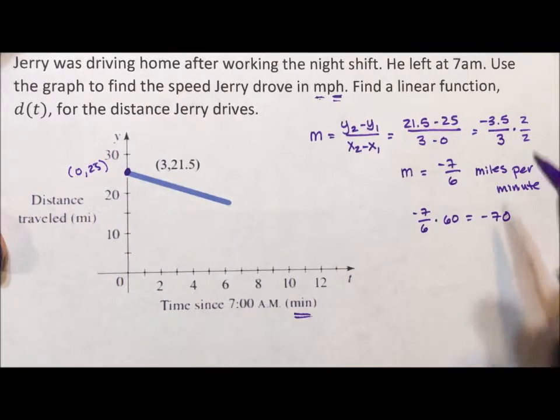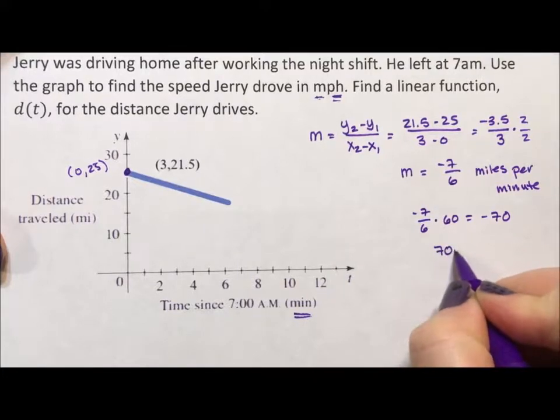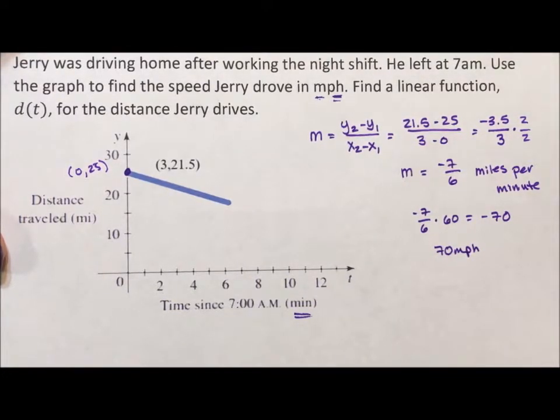So the slope is negative 7 sixths, but the speed is 70 miles per hour. It's negative because he's going towards home.